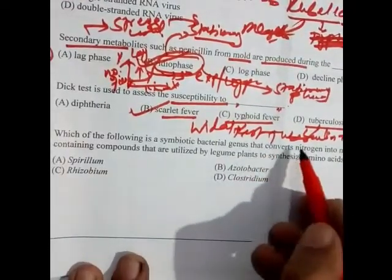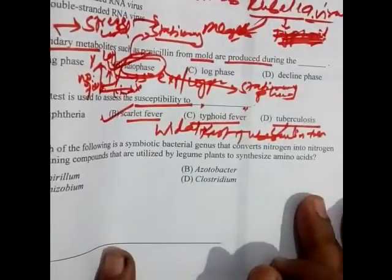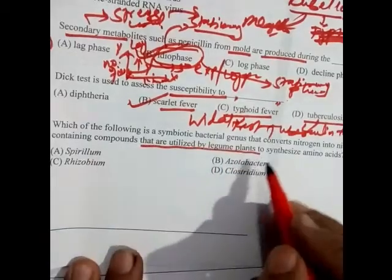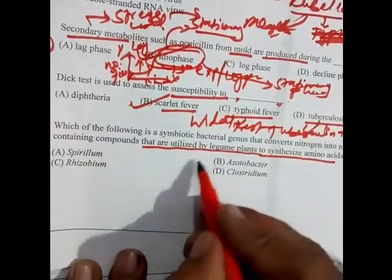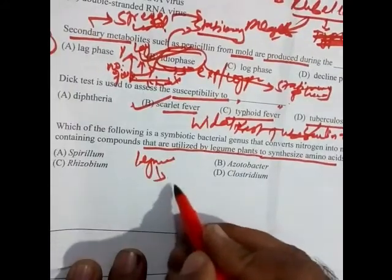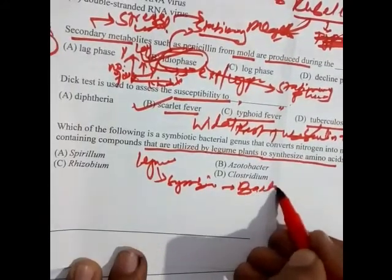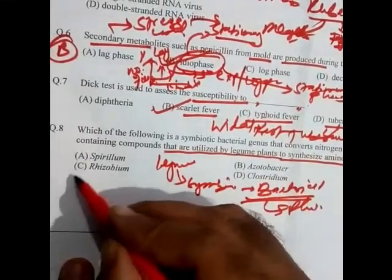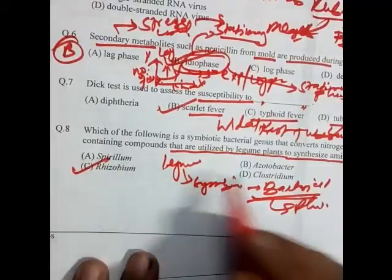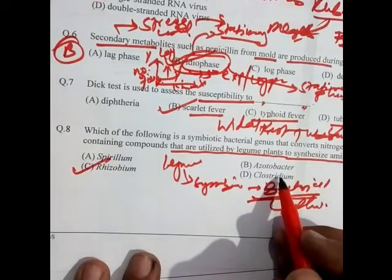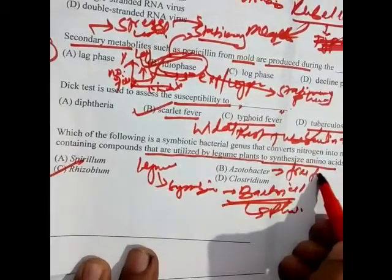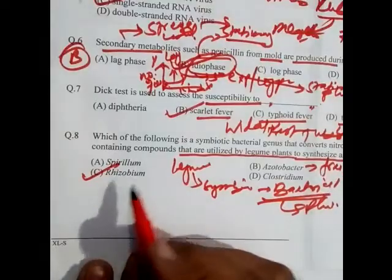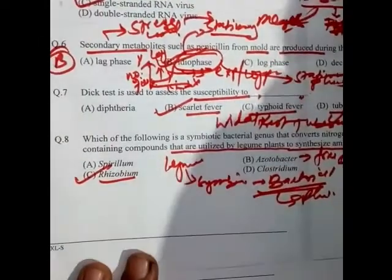Question 8: Which symbiotic bacterial genus converts nitrogen into nitrogen-containing compounds utilizing legume plants? The answer is Rhizobium. Other bacteria like Spirillum, Azotobacter, and Clostridium also fix nitrogen but they are free-living and do not form symbiotic associations with plants. Only Rhizobium forms a symbiotic association.